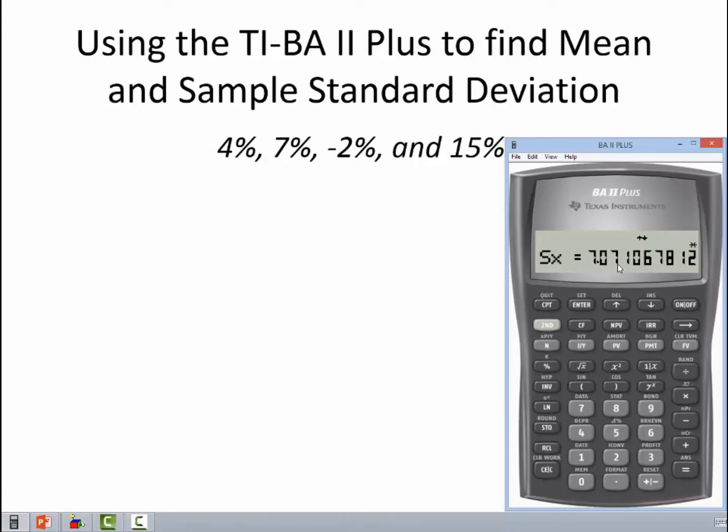Arrow down. Our sample standard deviation is 7.07. Now, there is one more standard deviation that you can get here, but don't use it. It's not the correct one. We're doing sample statistics here, so you need to use the sample standard deviation.